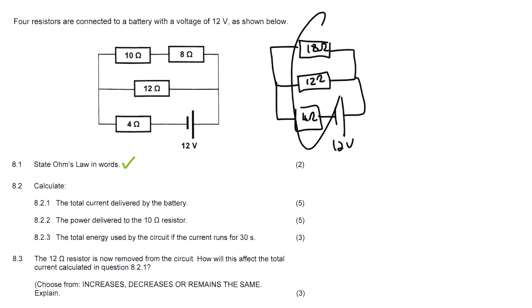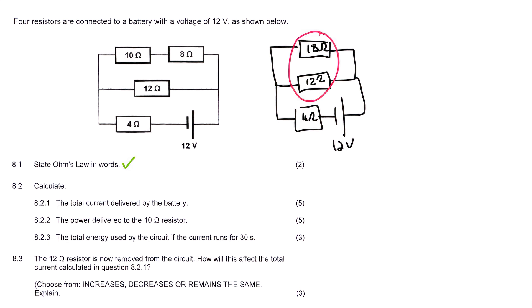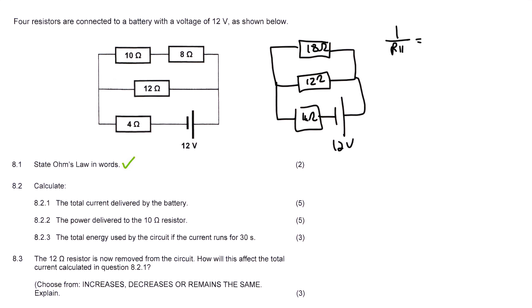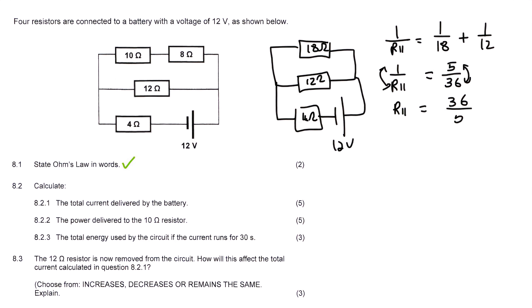Remember, these three are not in parallel — it's only these two that are in parallel. We're going to take these two and work out what their parallel resistance will be. So we say 1/R_parallel = 1/18 + 1/12. Then you type the right-hand side into the calculator, and that gives us 5/36. To get R_parallel, you flip both sides, so R_parallel = 36/5, which is 7.2 ohms. So these two together are 7.2 ohms.